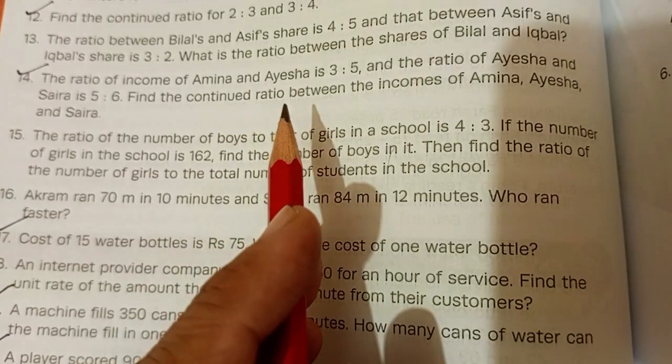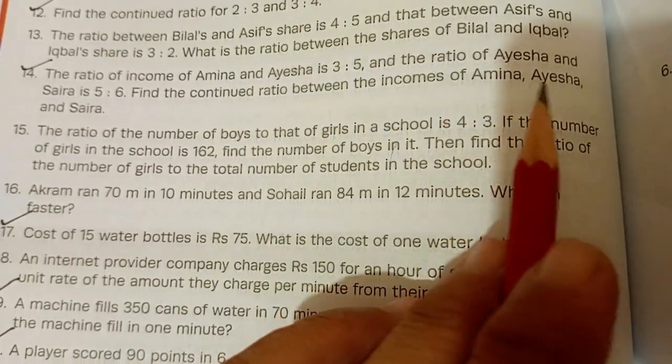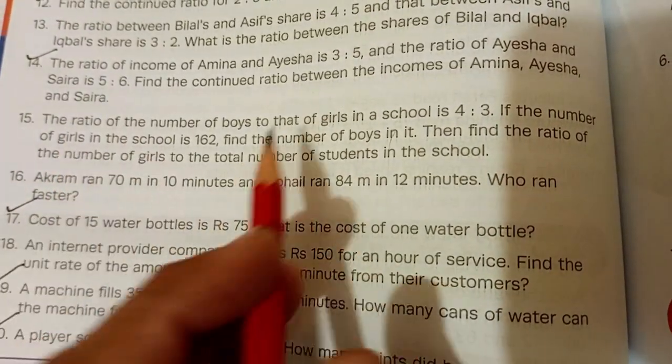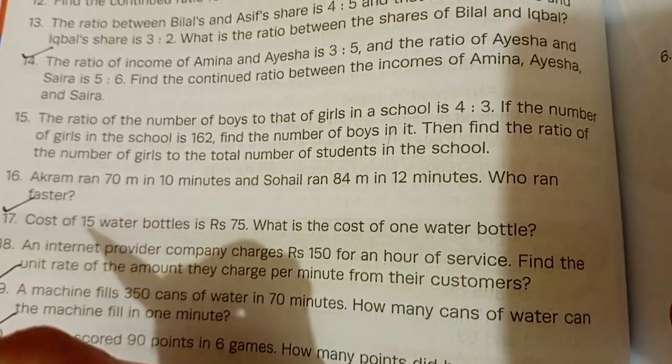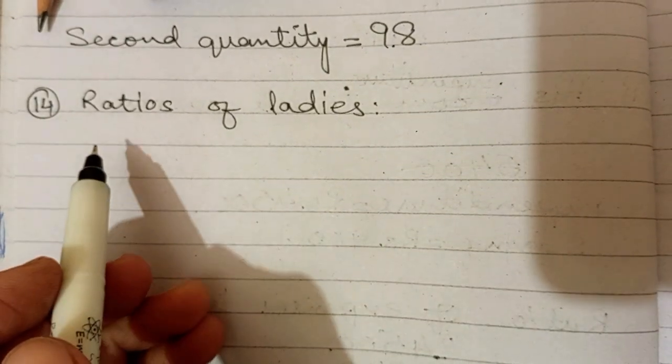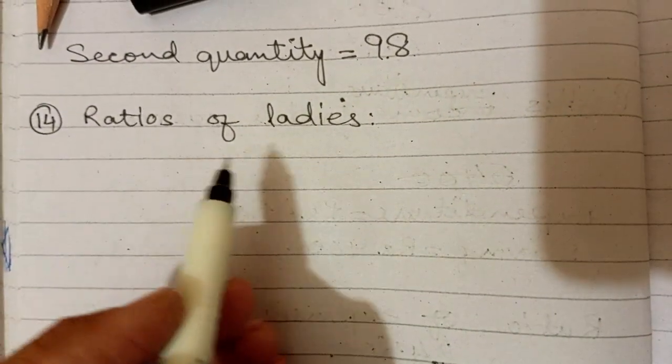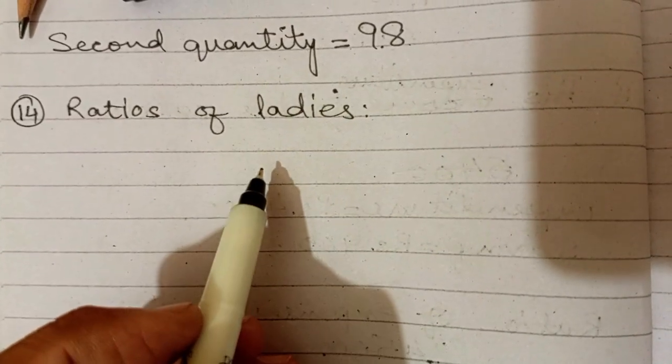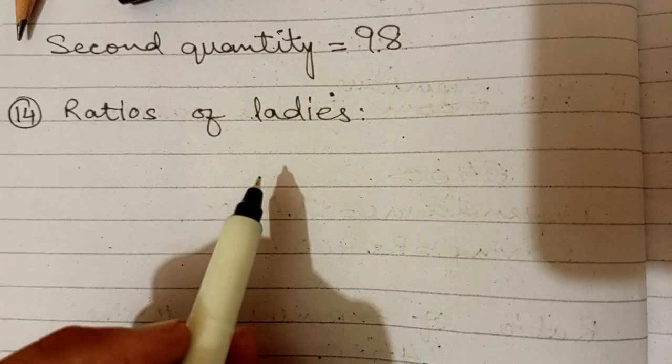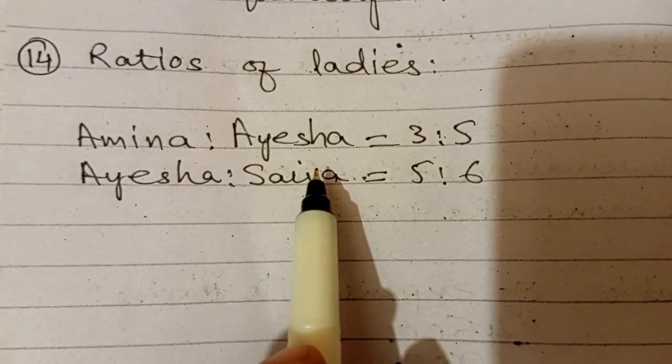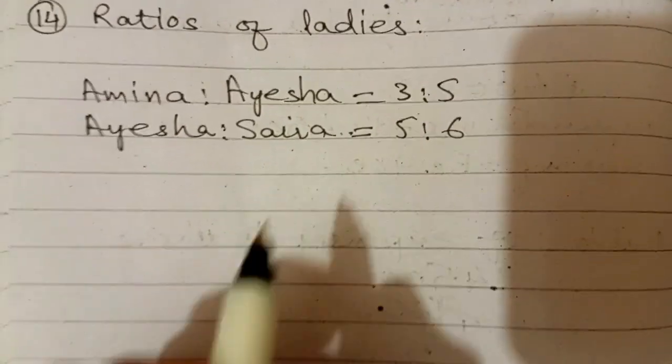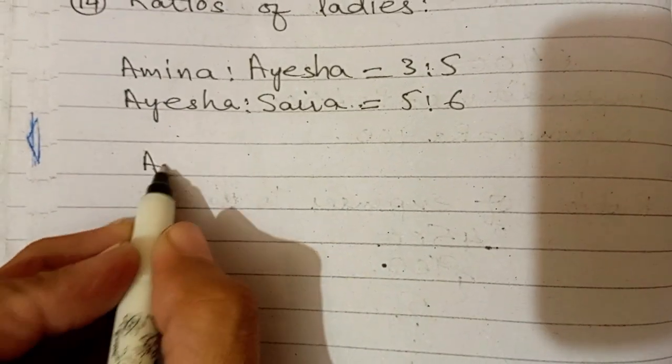Find the continued ratio between the incomes of Amina, Aisha and Saira. اب وہ کہہ رہے ہیں آپ اس کا ratio بتا دیں. یہاں پہ ہم لکھیں گے ratios of ladies کیونکہ بھئی girls تو ہیں نہیں وہ اسکول میں پڑھ تو رہی نہیں ہے کیا ہے income آریے اس کا مطلب ہے وہ بڑی ہیں. اب یہاں mention کر دیں گے Amina اور Aisha کا ratio یہ رہا اور Aisha اور Saira کا یہ اب ہم یہاں پہ mention کریں گے سب سے پہلے ان کے نام.